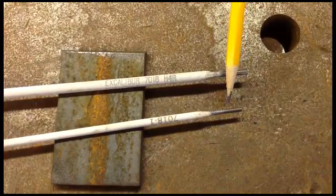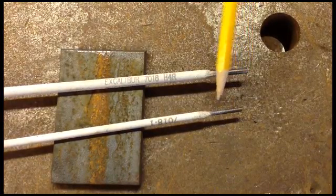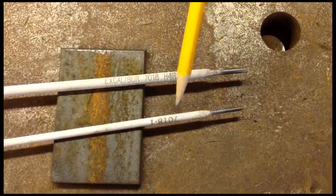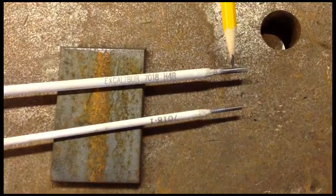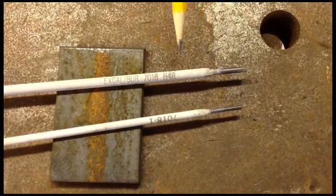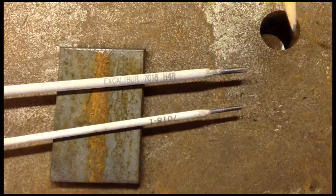This is 7018 3/32nd rod, which refers to the diameter of the metal inside your flux. This is 1/8 inch 7018, which refers to the size of the metal inside your flux. Both will lay down the same type of material, but you use different amperage.